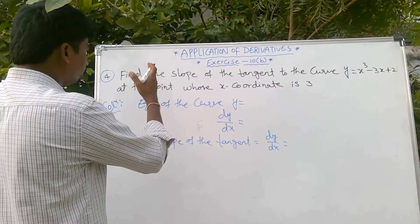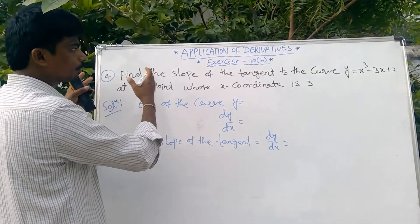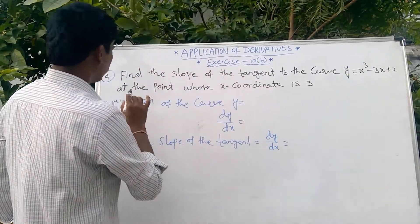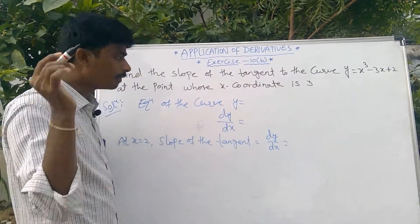Second problem: find the slope of the tangent. This is the fourth problem exercise 10b. y = x³ - 3x + 2 at the point whose x coordinate is 3. The previous problem x coordinate was 2, this problem x coordinate is 3.